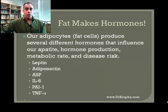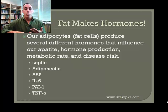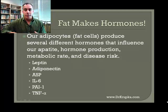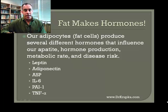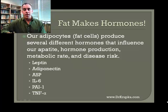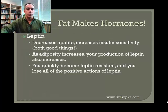Our adipocytes, or our fat cells, produce several different hormones that influence our appetite, our hormone production, our metabolic rate, and our disease risk. Some of those hormones we're going to talk about here are leptin, adiponectin, ASP, IL-6, PAI-1, and TNF-alpha. I know that sounds like alphabet soup, but we're going to make sense of it for you.